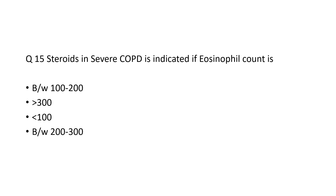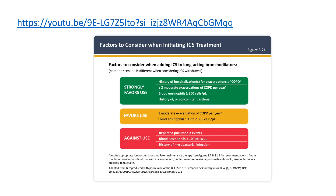Next question: steroids in severe COPD are indicated at what eosinophil count level? Options are between 100 to 200, more than 300, less than 100, and between 200 to 300. From the latest GOLD guidelines, steroids are to be given if the blood eosinophil count is more than or equal to 300. For further updates in GOLD 2025, you can go to the link provided.